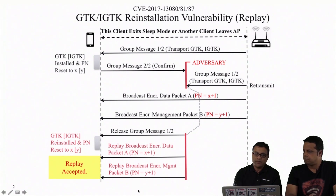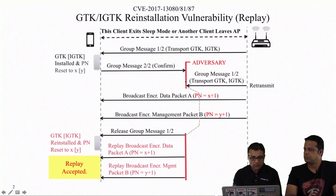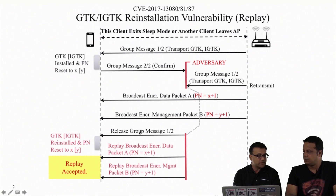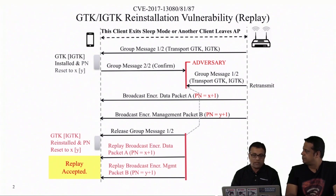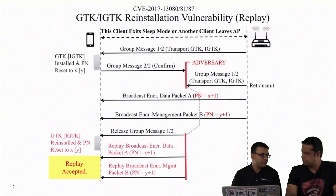Because the packet numbers reset, the attacker can now replay packets A and B, which have packet numbers X+1 and Y+1. As a man in the middle — or just by sniffing — the attacker gets a copy of those packets and can replay them. What is achieved is replay of broadcast/multicast encrypted data packets, as well as replay of broadcast or multicast management packets protected by IGTK.